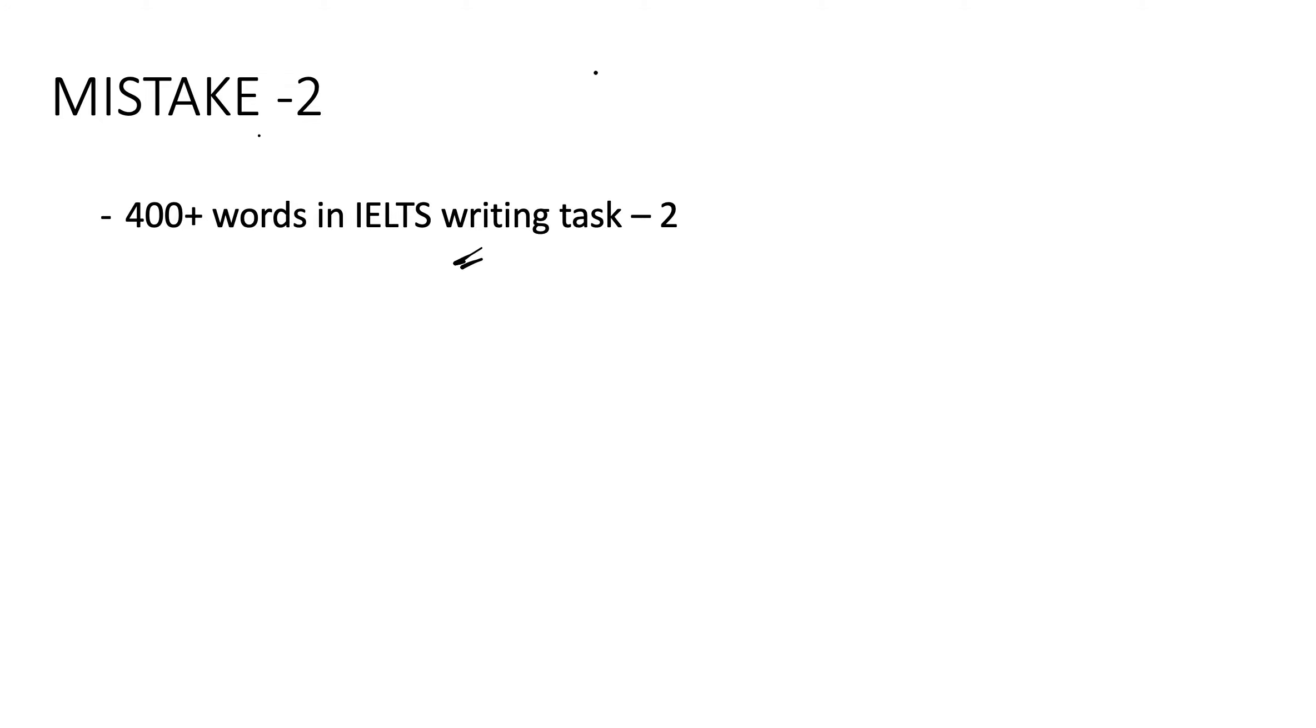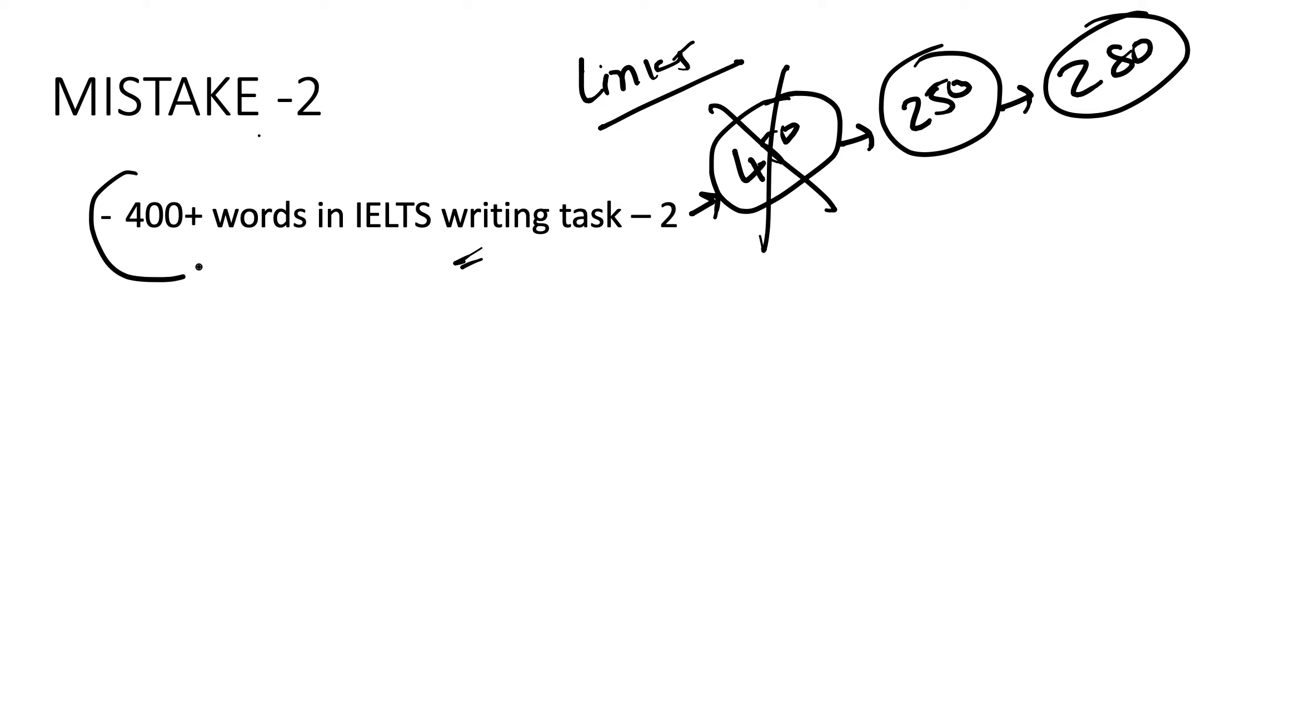This mistake is very common. Many students write 450 words in writing task 2. Well, the requirement is just 250 words. If you are an academic student or general student, in both cases the requirement is just 250 words. There is no need to write 450 words. For the safer side, you can go up to 280 words, not more than that.